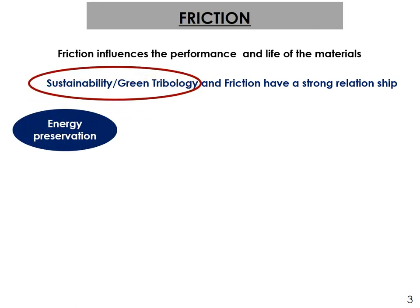Sustainability means energy preservation, and we know that friction consumes a lot of energy — it reduces the mechanical energy of the system because we have to spend energy to overcome friction. A lot of energy is wasted. If we can reduce friction, we can save and preserve energy, and that way there is a strong relationship with sustainability and green tribology.